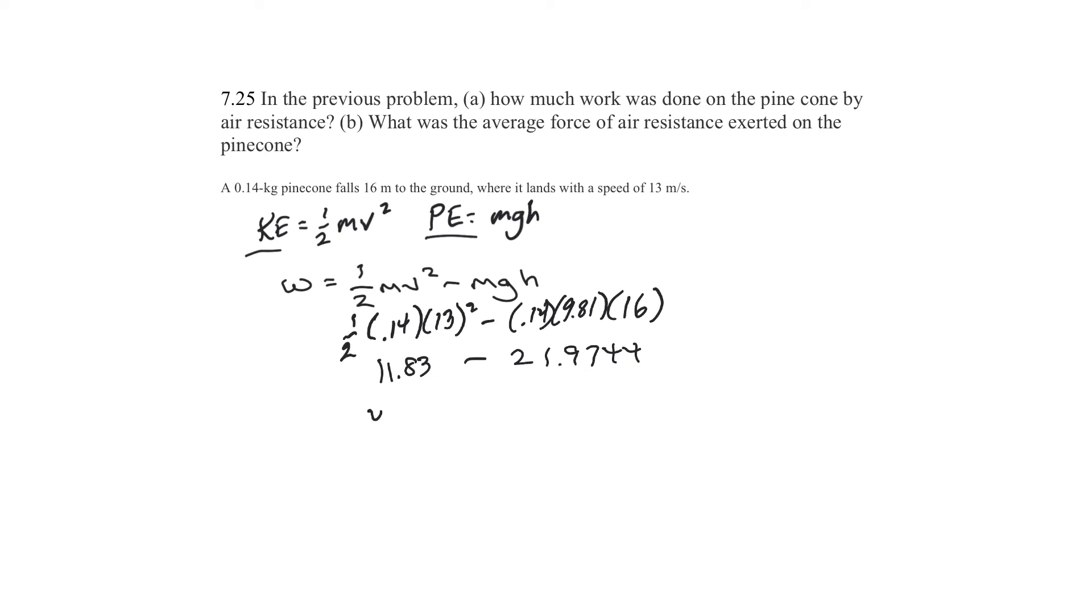This gives you work equals a negative 10.14 joules. Two significant digits would give you 10 joules. And so it's negative because it's acting in the other direction, so that's 10 joules.